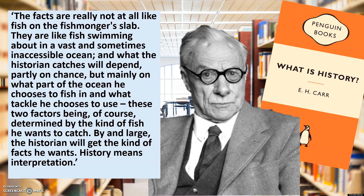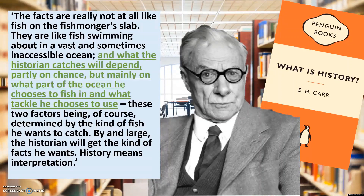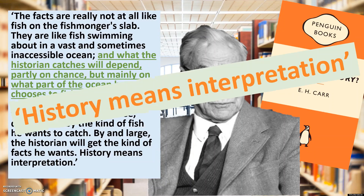This is EH Carr, and anybody who has studied history at university will probably have been made to read one of his books. The most famous is called 'What is History,' and he talks about sources and the facts we can get from them. He gives the example of facts being like fish, but he says something really interesting: what the historian catches — the piece of information we find — will depend not only on chance but also on where they are looking and what they choose to use to find them. The types of sources we use are incredibly important, but it's not just the sources we use — it's what we do with them. Carr says that history means interpretation: understanding sources and trying to draw out what is important.